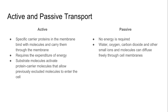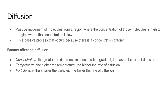When we talk about passive transport, no energy is required. Things like water, oxygen, carbon dioxide, and other small molecules can diffuse freely through the membrane. Diffusion is a passive movement of molecules — they move from a region where the concentration is high to a region where the concentration is low. This passive process is allowed to occur because of the difference which we refer to as the concentration gradient.